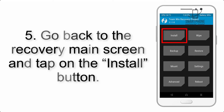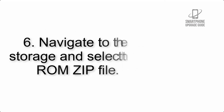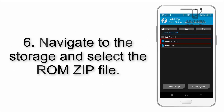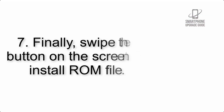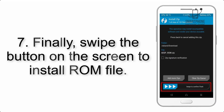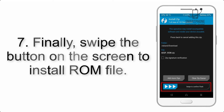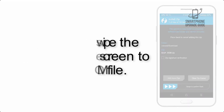Step 5: Go back to the recovery main screen and tap on the Install button. Step 6: Navigate to the storage and select the ROM zip file. Step 7: Finally, swipe the button on the screen to install the ROM file.